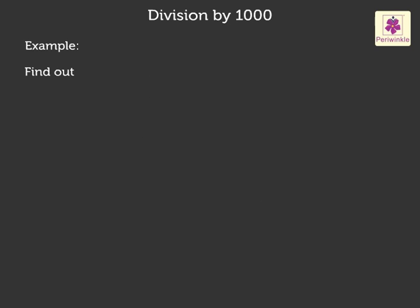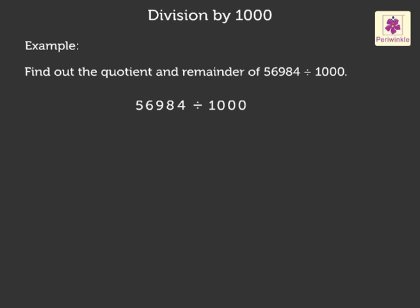Now, let us solve one more example without actual division. Find out the quotient and remainder of fifty-six thousand nine hundred eighty-four divided by one thousand. We know that the digits in the ones place, the tens place, and the hundreds place of the dividend form the remainder. Thus, here nine hundred eighty-four is the remainder and the remaining digits form the quotient. Thus, here fifty-six is the quotient.